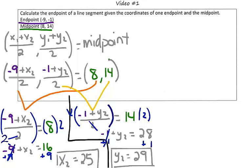So what we've just found is that our other endpoint must be the ordered pair 25, 29. However, we can check this.